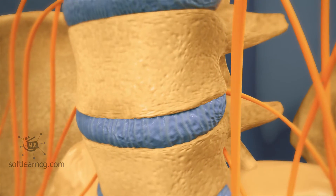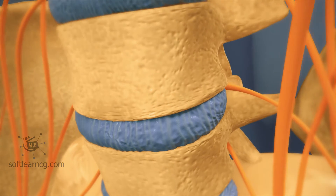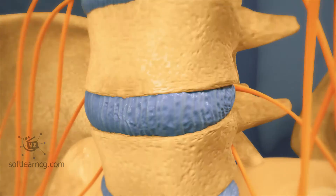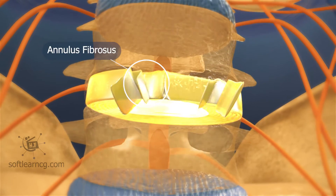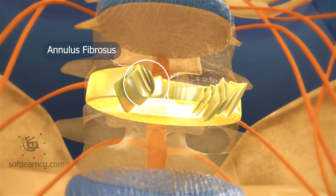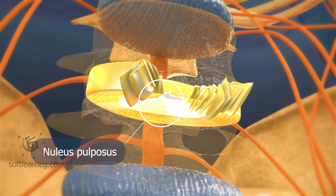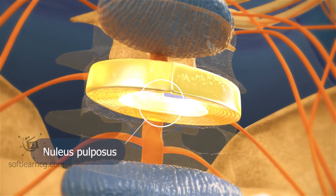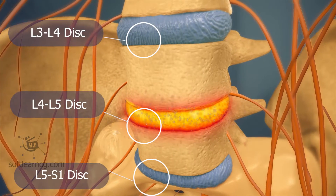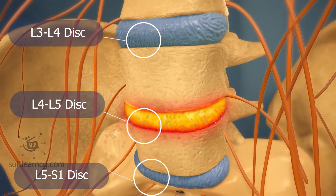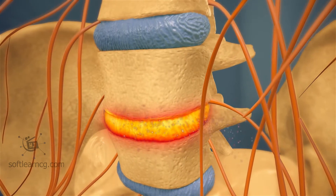A spinal disc acts as a shock absorber between the vertebrae of the spine and allows for movement in the spine. The durable outer portion of the disc, called the annulus fibrosis, serves to contain the soft inner portion of the disc, the nucleus pulposus.